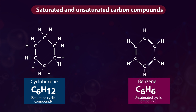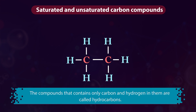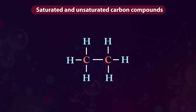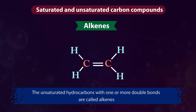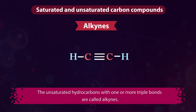Compounds that contain only carbon and hydrogen are called hydrocarbons. Saturated hydrocarbons are called alkanes. Unsaturated hydrocarbons with one or more double bonds are called alkenes, and unsaturated hydrocarbons with one or more triple bonds are called alkynes.